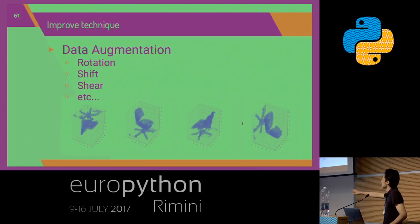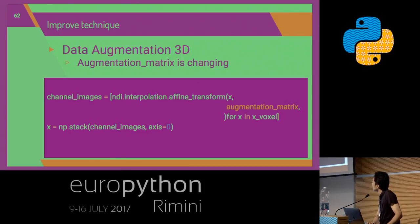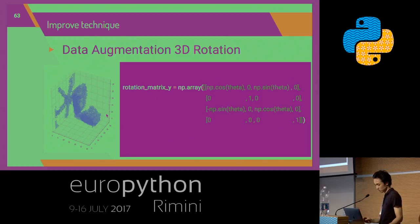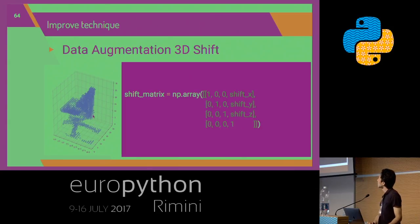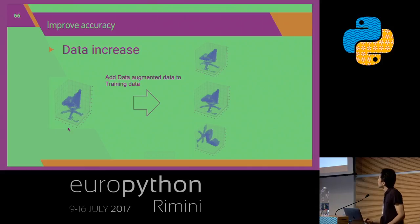Data augmentation involves changing the data through rotation, shift, and shear. In code: the voxel data is provided, each voxel data has an augmentation matrix applied to it, the changed data is obtained, and it is re-converted to the number format. For example, the rotation matrix produces a rotated version of the data, the shift matrix produces a shifted version, and the shear matrix produces a sheared version. In my case, augmented data was added to the training data.